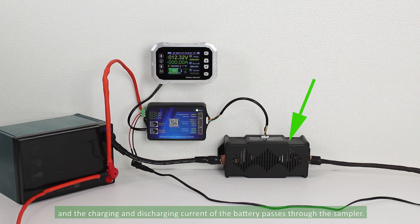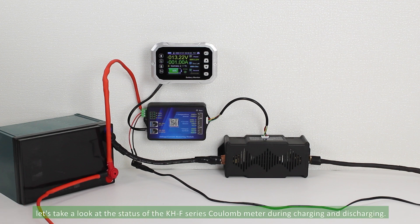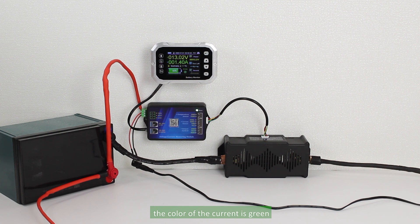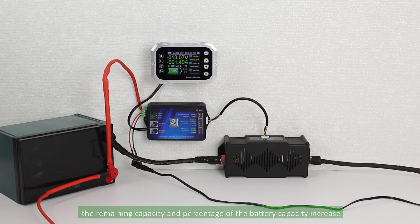Finally, let's take a look at the status of the KHF series Coulomb meter during charging and discharging. When the battery is being charged, the color of the current is green, the remaining capacity and percentage of the battery capacity increase, and the estimated time indicates how long it will take to fully charge the battery.